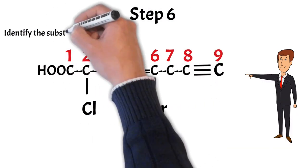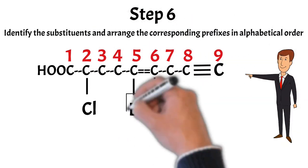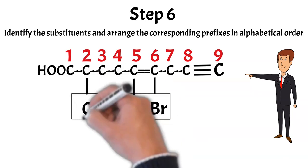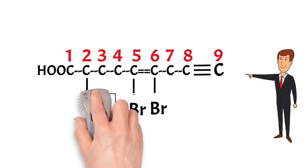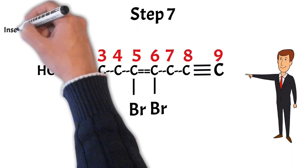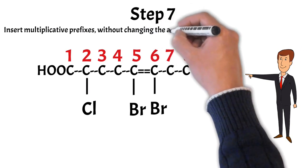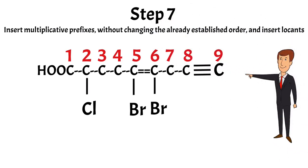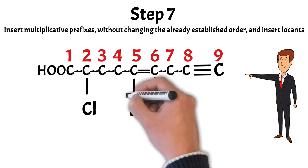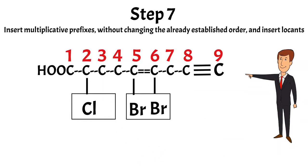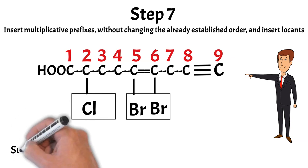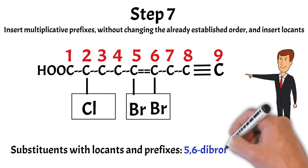Step number 6: identify the substituents and arrange them in alphabetical order. For example, in this compound there are two kinds of substituents — bromine and chlorine. Their alphabetical order is bromine and then chlorine. Step number 7: count each of the substituents and insert the multiplicative prefixes without changing the already established order, and insert locants. Multiplicative prefixes mean: if there are two bromines use 'di', if 3 use 'tri', if 4 use 'tetra', if 5 use 'penta', etc. This compound contains two bromines, therefore we write 'dibromo', and it contains only a single chlorine so no multiplicative prefix is required for chloro. The secondary prefix part of the name will become '5,6-dibromo-2-chloro'.